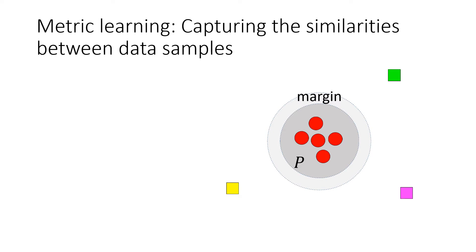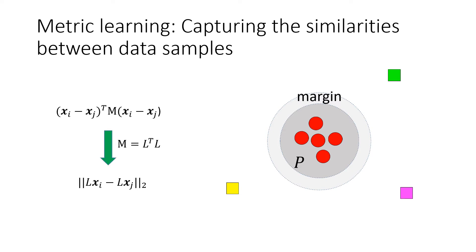The Mahalanobis-based distance is equivalent to the Euclidean distance after linear projection of the feature vectors, and the Euclidean distance is only suitable for characterizing Gaussian noise.